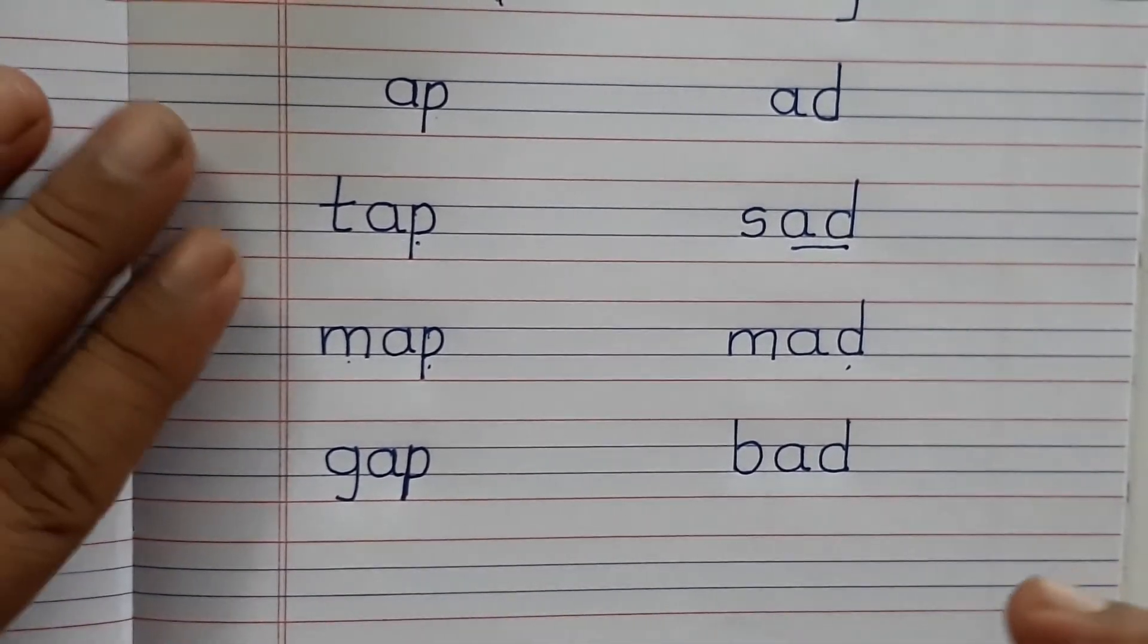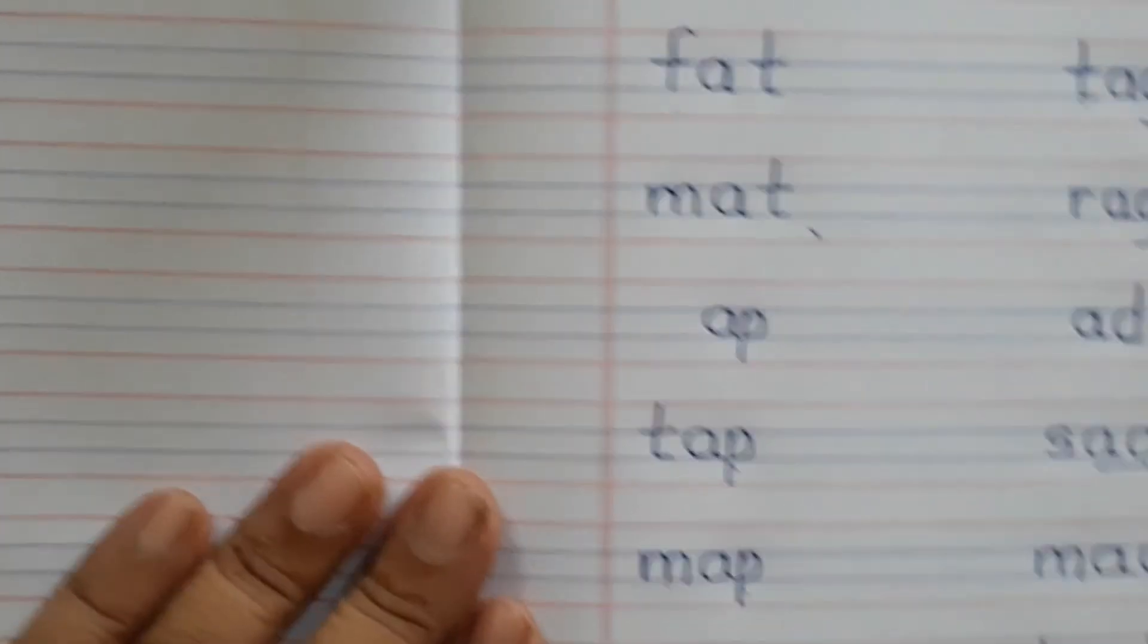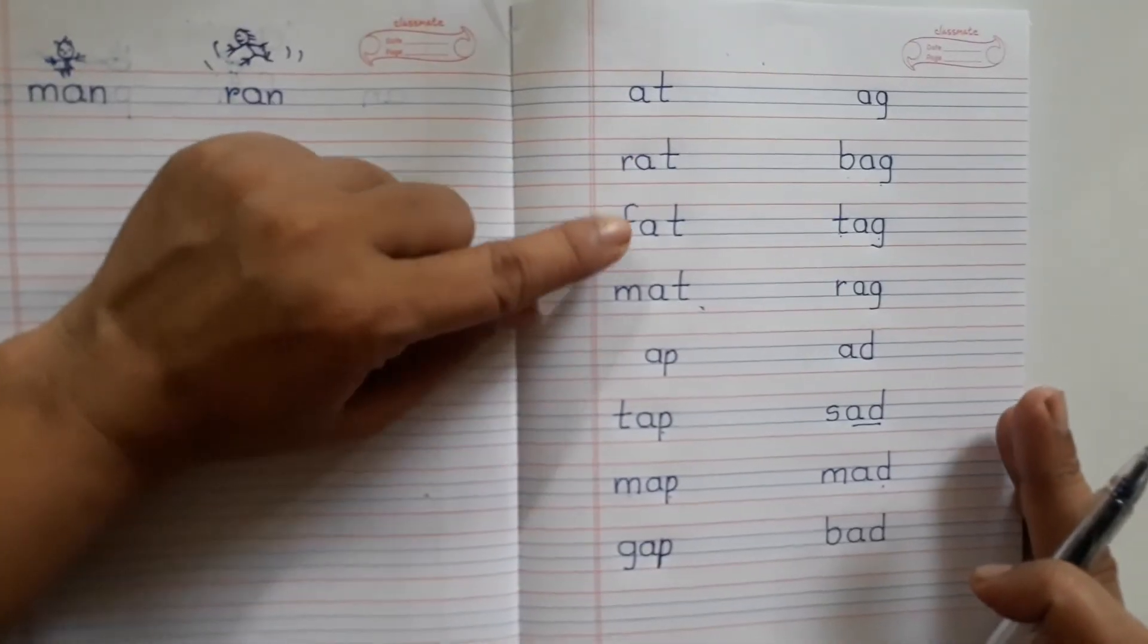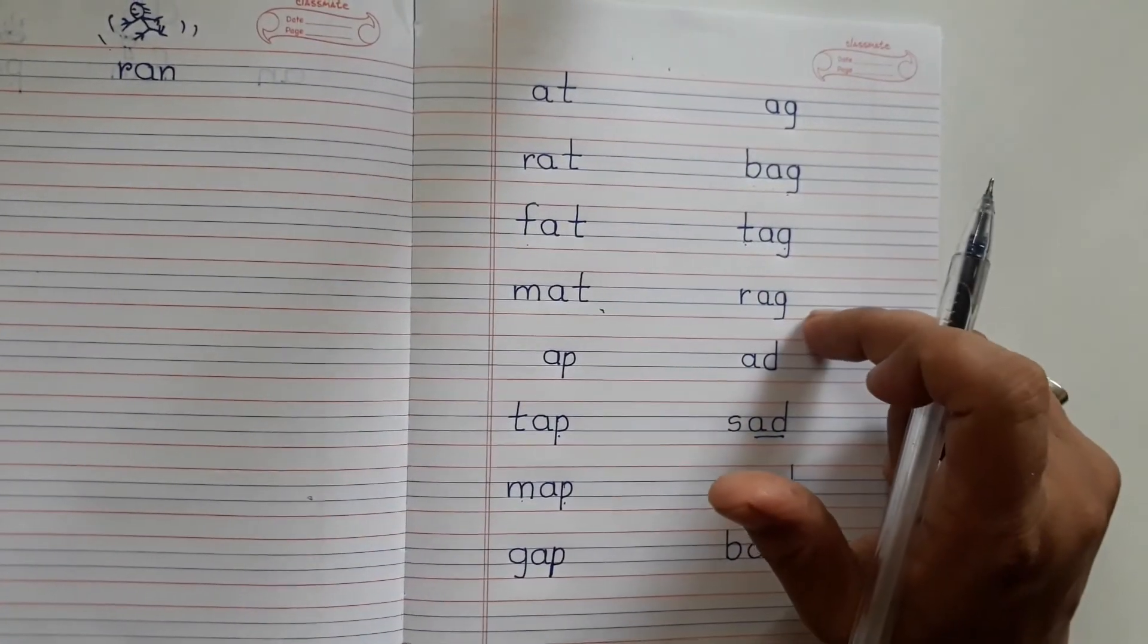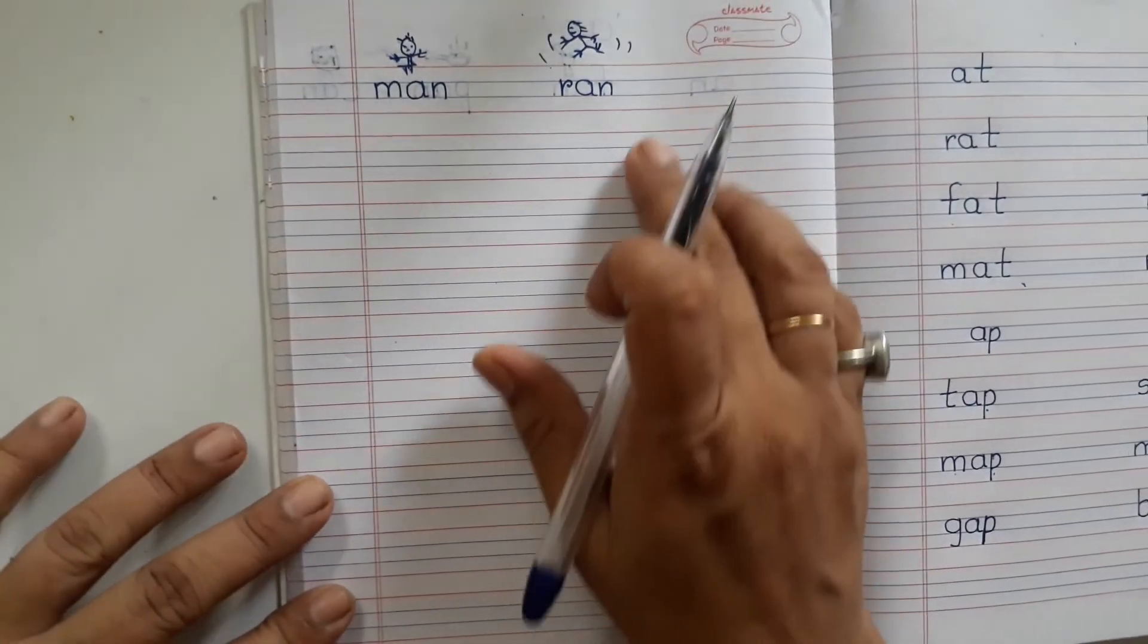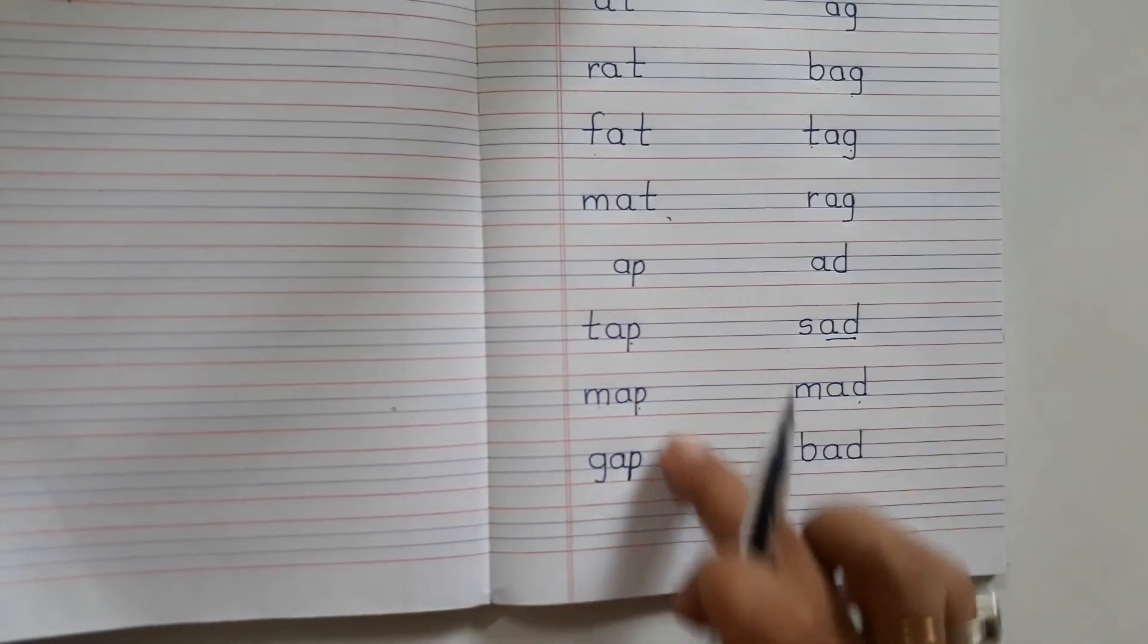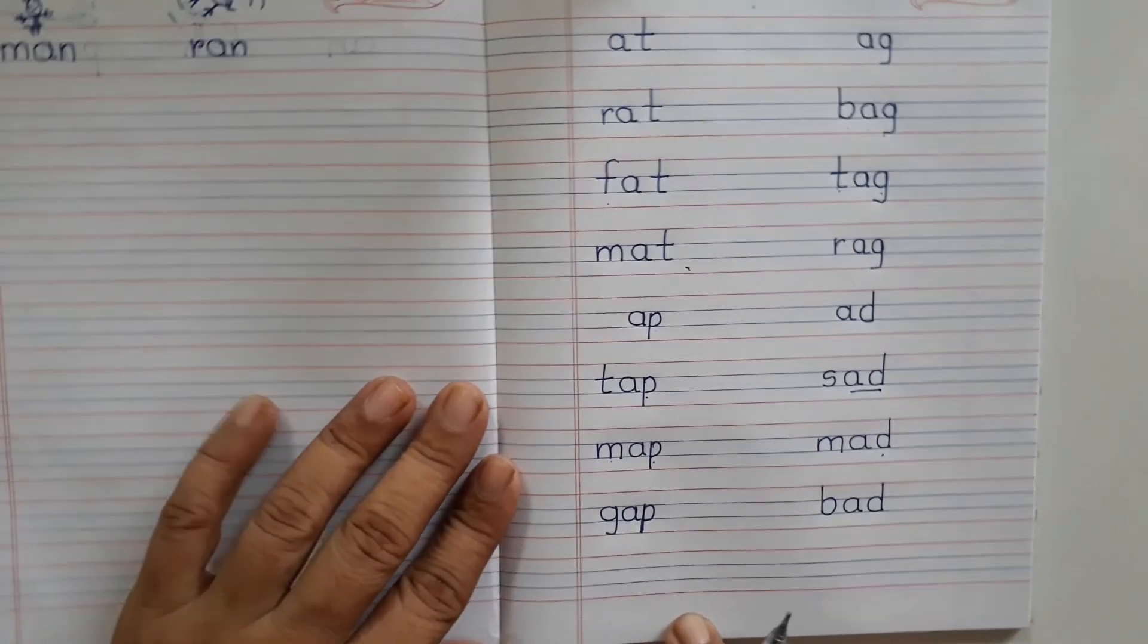Okay. So today we have learnt these eight spellings. These spellings you have to write in your notebook full line. You have to write down these ten spellings in full line. Okay.